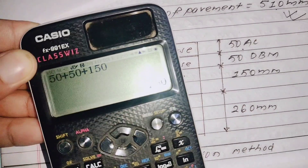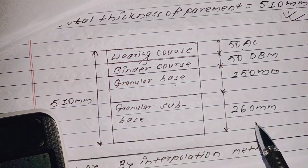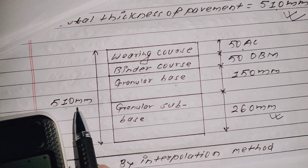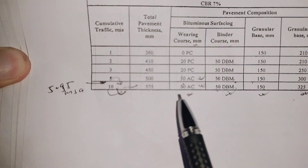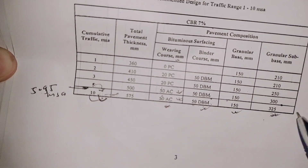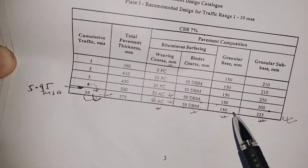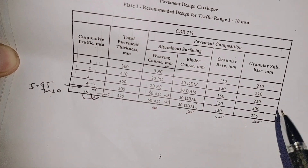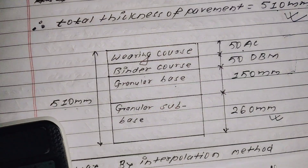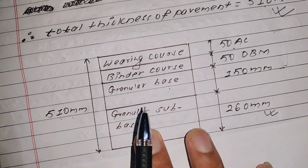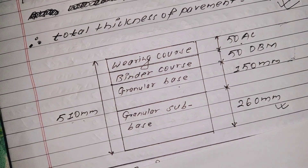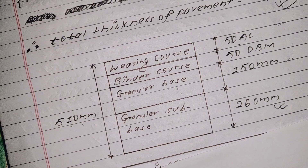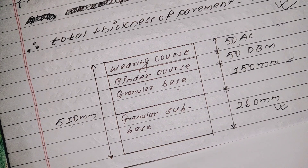The remaining layer is granular subbase = 510 − (50 + 50 + 150) = 260 mm. So total pavement thickness = 50 + 50 + 150 + 260 = 510 mm confirmed. This completes the IRC 37-2001 flexible pavement design. If you haven't subscribed, please subscribe. Leave any queries in the comment section. See you in the next video — thank you for watching.